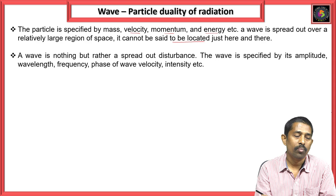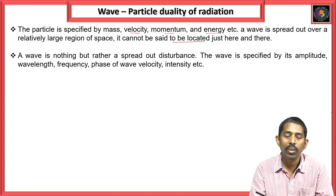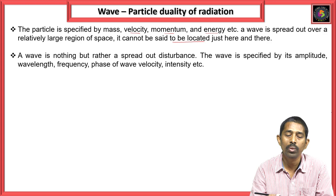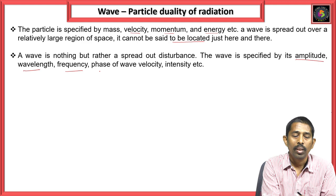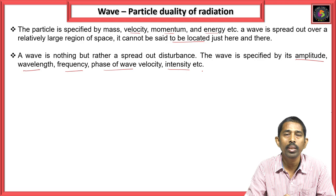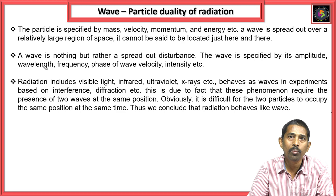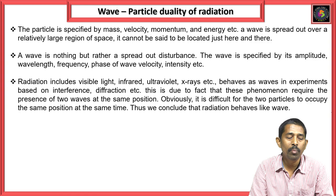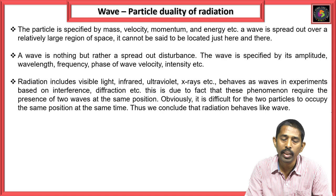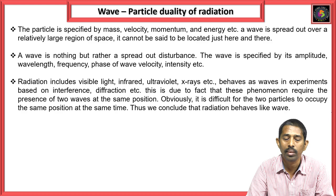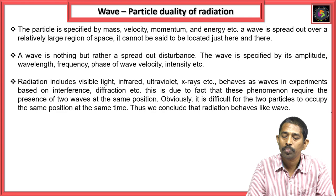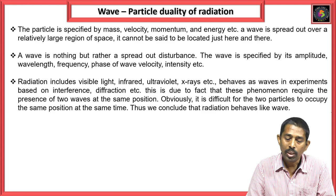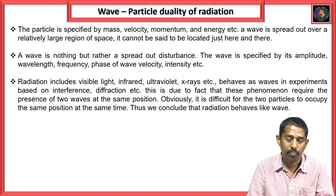Coming to the wave nature: a wave is nothing but a spread of disturbance. Whatever volume or space is available, it will be spreading out. A wave is specified by amplitude, wavelength, frequency, phase, wave velocity, and intensity. Radiation includes visible light, infrared, UV rays, and X-rays — these behave as waves in experiments based on interference and diffraction. This is due to the fact that these phenomena require the presence of two waves at the same position; it is difficult for two particles to occupy the same position at the same time. Thus, we conclude that radiation behaves like a wave.